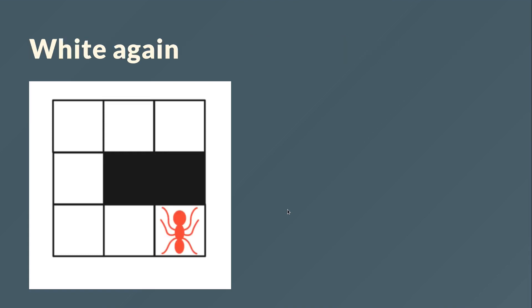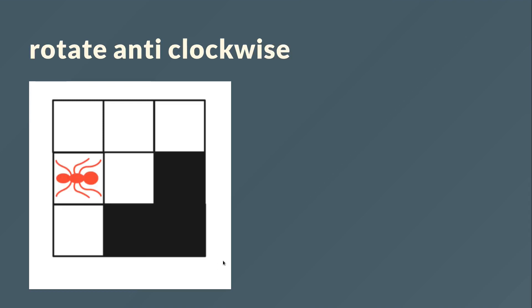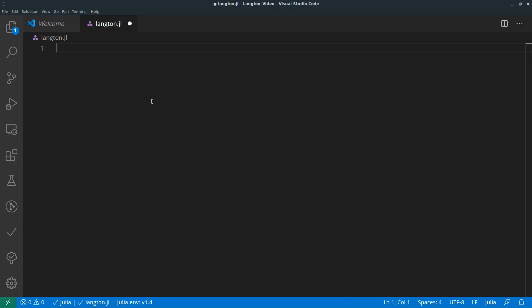So we do it again — move to there and then to there. Same starting position, but these four squares are now black. On a black square we move anti-clockwise, move forward, and invert the cell the same way. That's what we want to program today, and we need several packages for it.